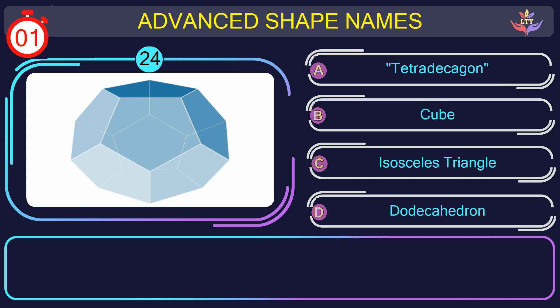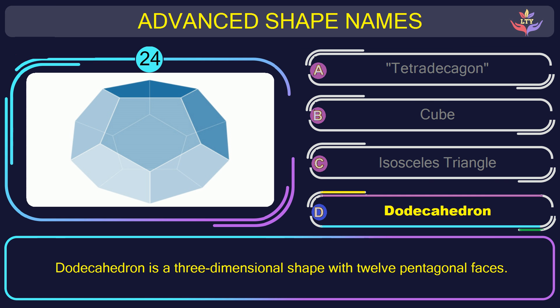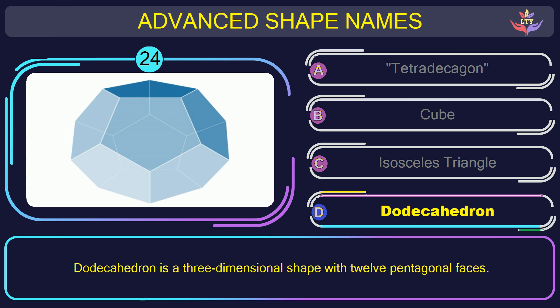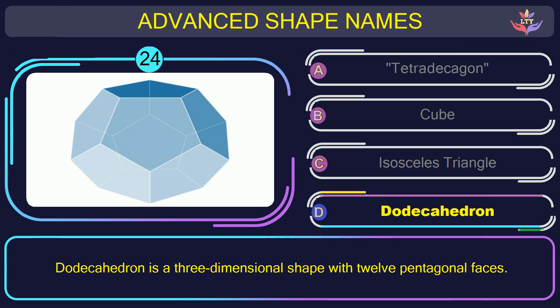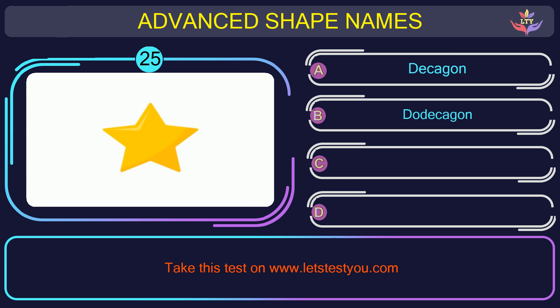Question number twenty-four. Guess the name of the shape in this picture. The correct answer is option D. Dodecahedron. Dodecahedron is a three-dimensional shape with 12 pentagonal faces.